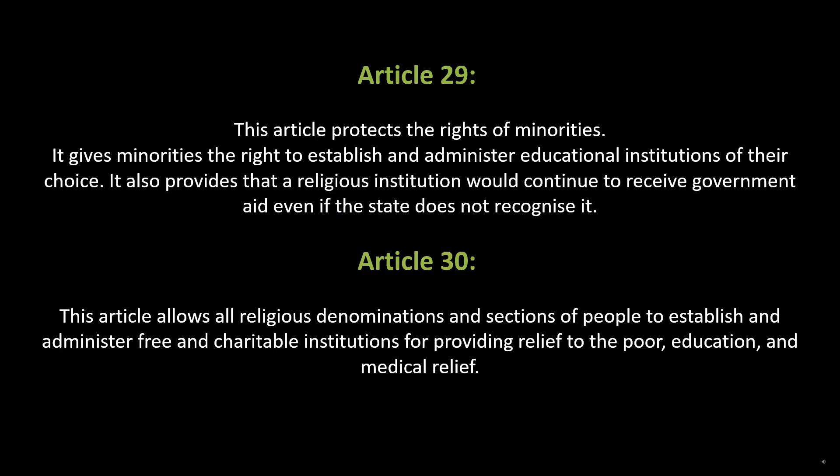Article 29 protects the rights of minorities. It gives minorities the right to establish and administer educational institutions of their choice. It also provides that a religious institution would continue to receive government aid even if the state does not recognize it.